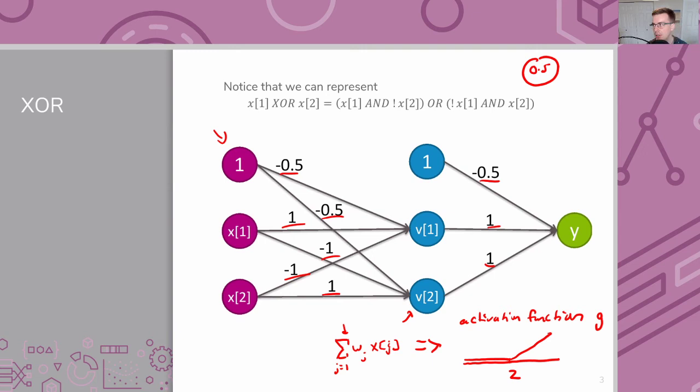In this case, the ReLU kind of caps things at 0 so they're not negative, but then has this kind of increasing value for increasing things. So this one's actually not bounded between 0 and 1 necessarily. It's okay to have larger values here. Okay, so that's the neural network.